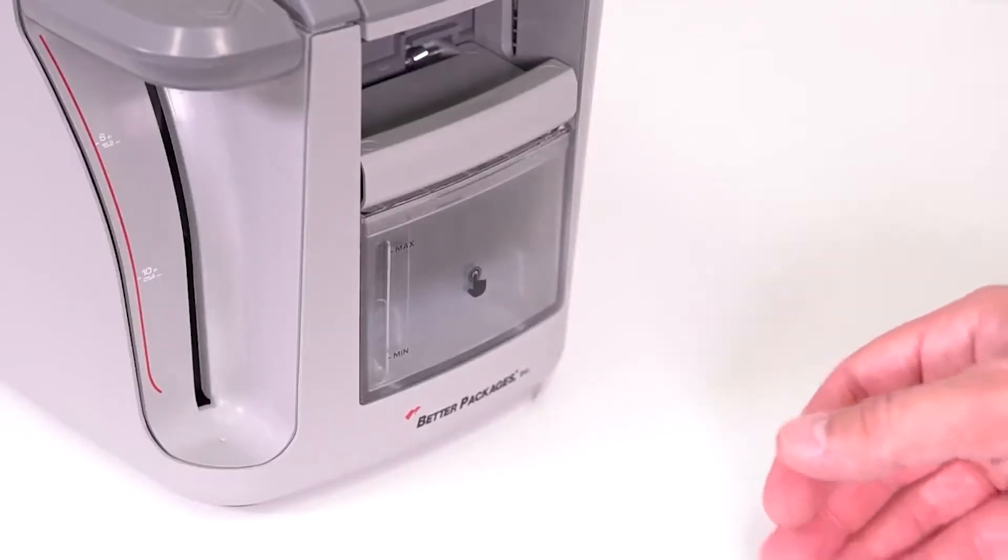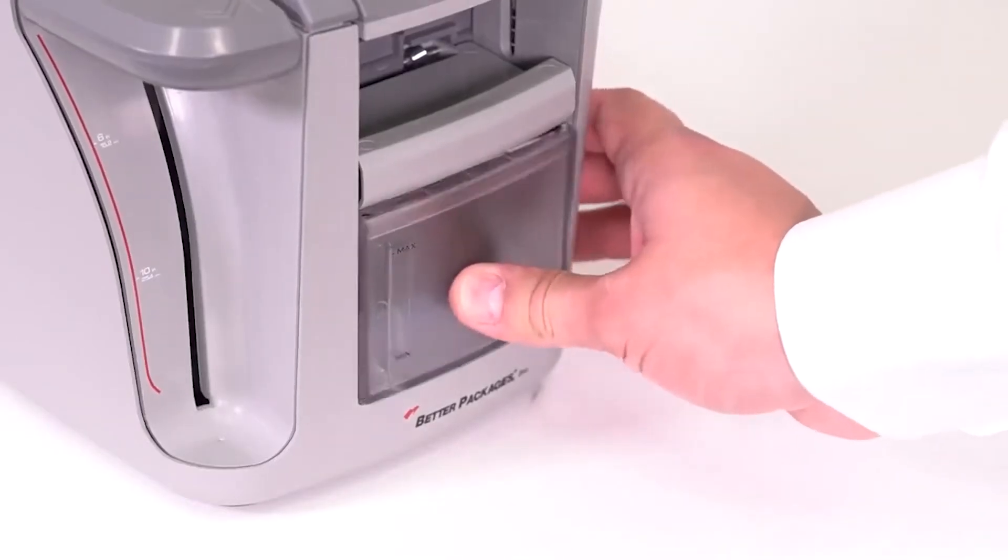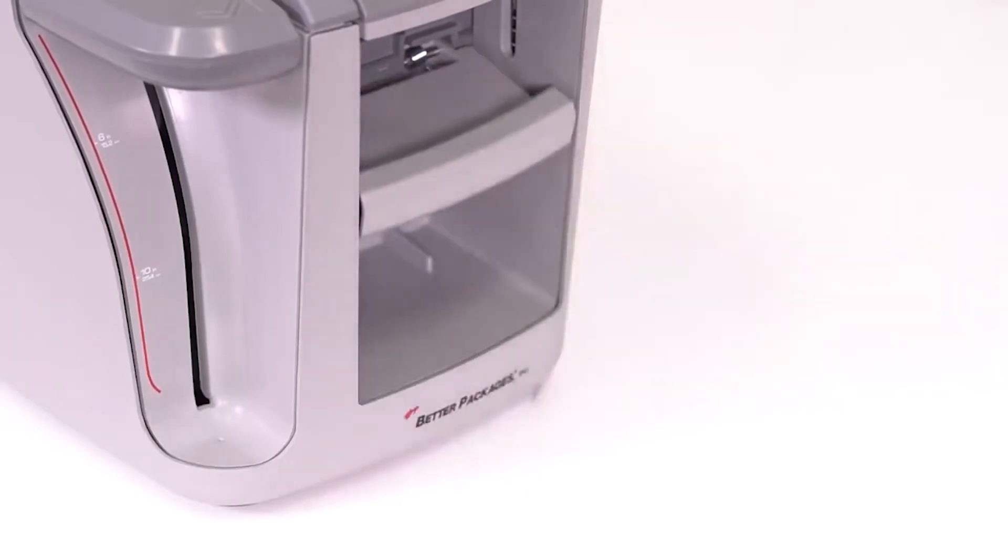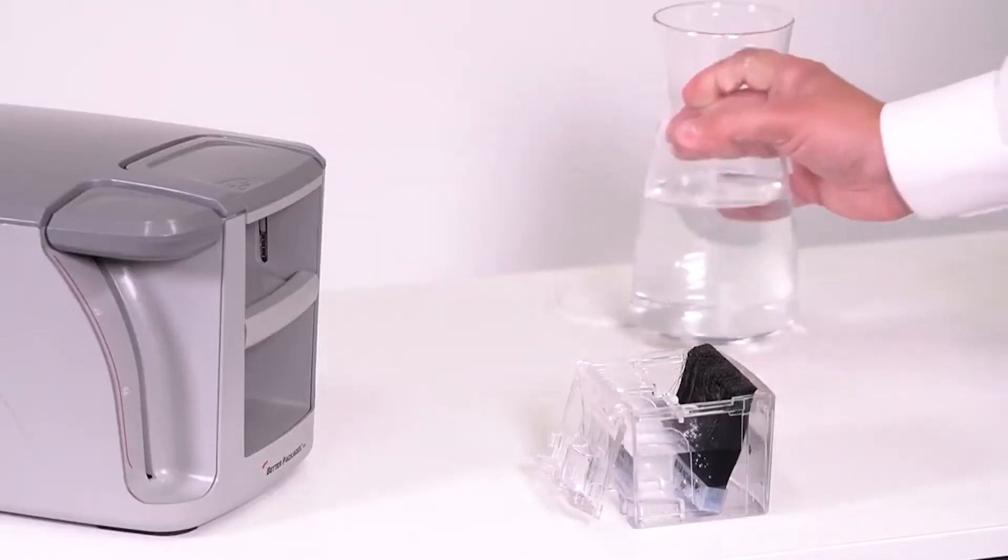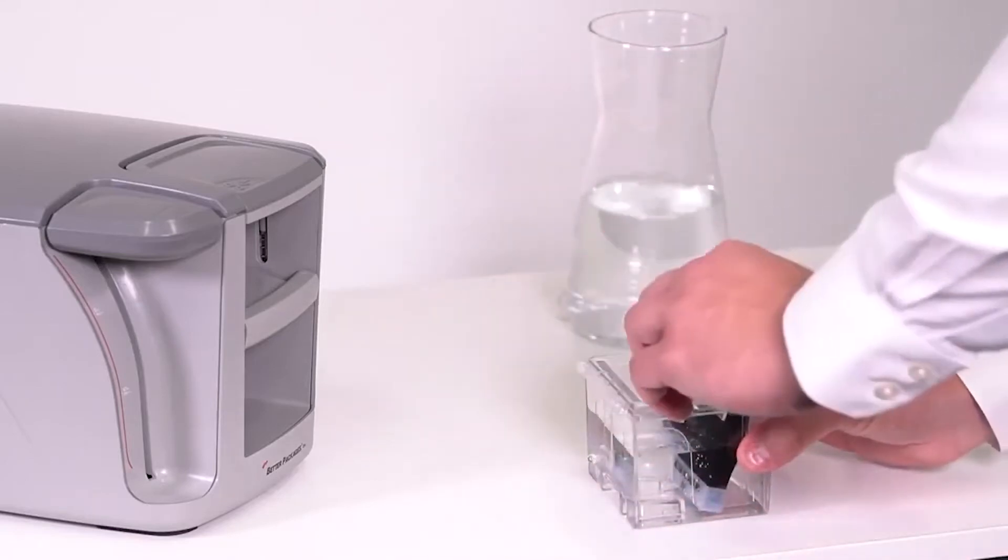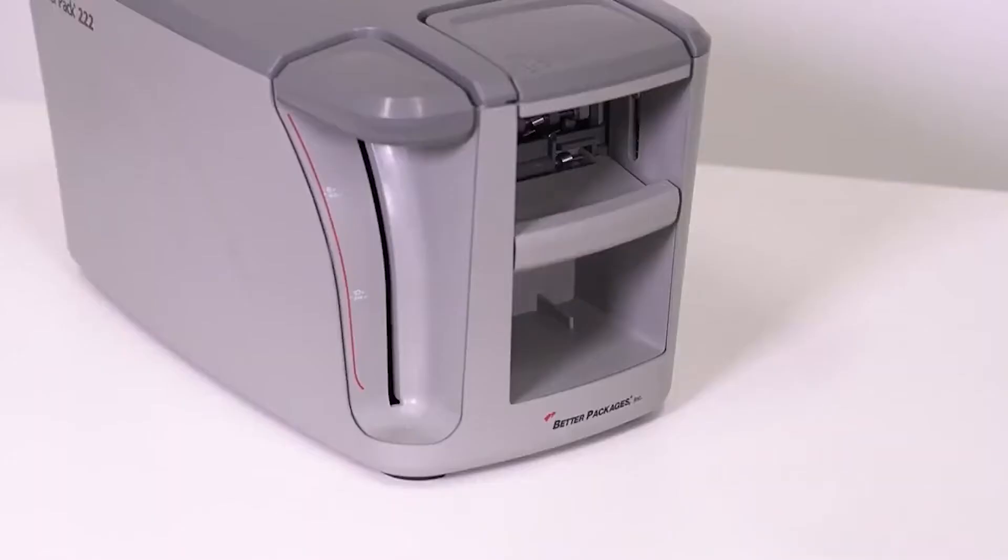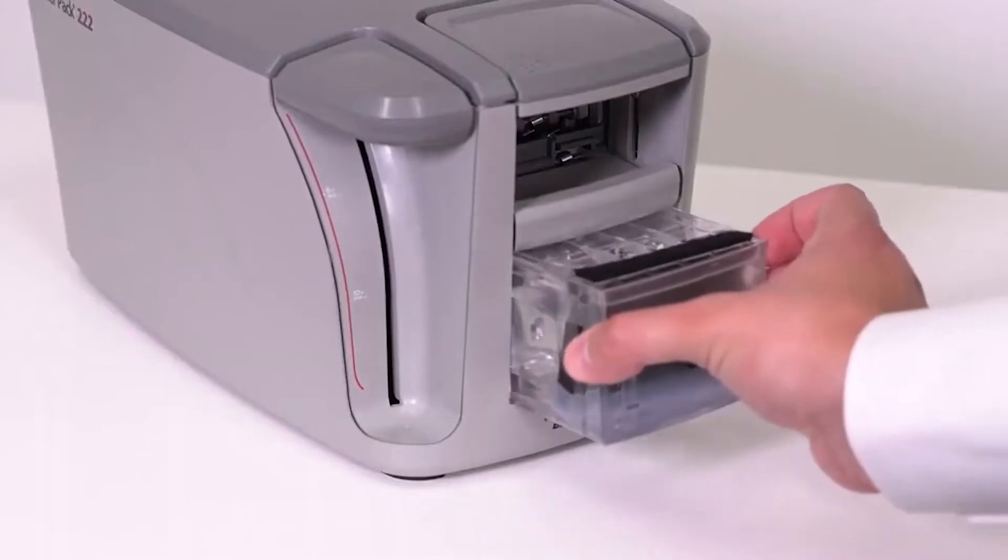Firstly, you'll need to fill the water tray up. To remove it from the machine, press it in and pull it out. When you've filled the water tray, put it back into the machine and press it in to lock it in place.